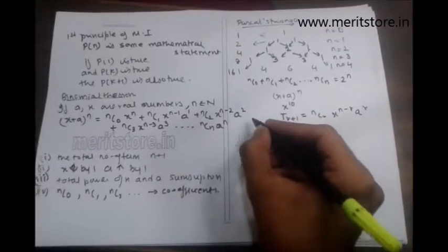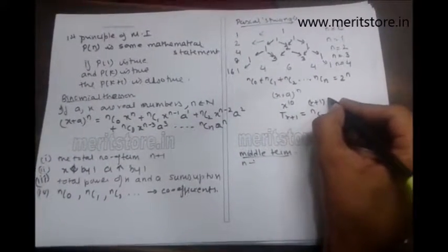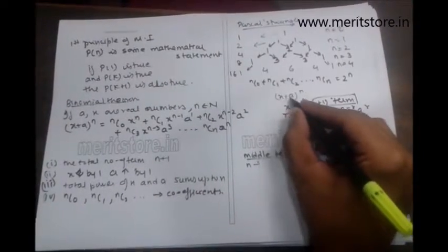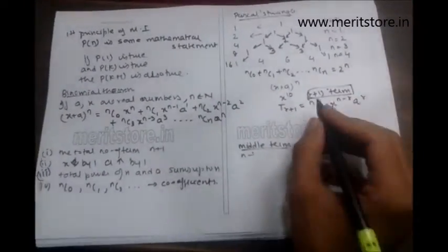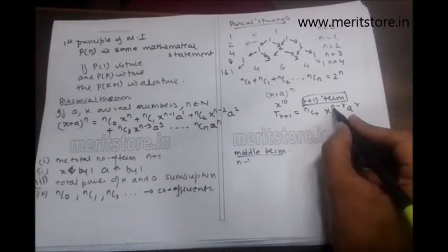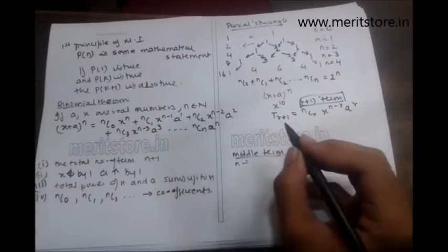To find the r plus 1 term in the expansion of x plus a the whole raised to n, the general formula goes t r plus 1 equals ncr, x raised to n minus r, a raised to r.